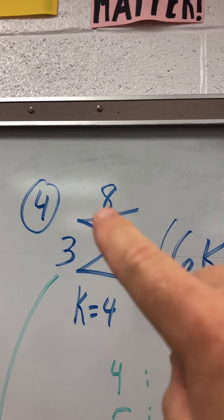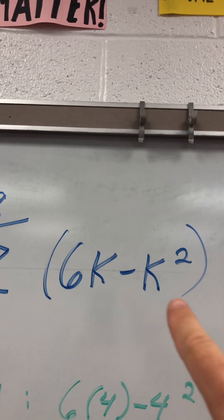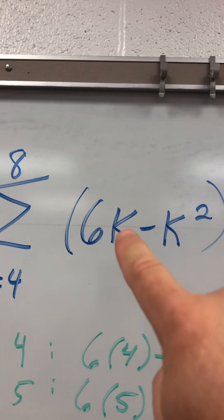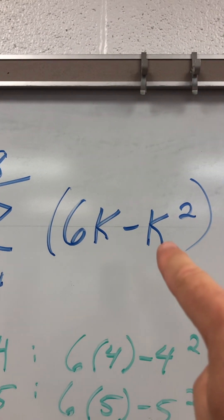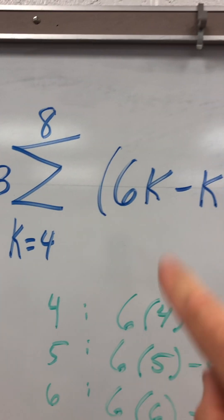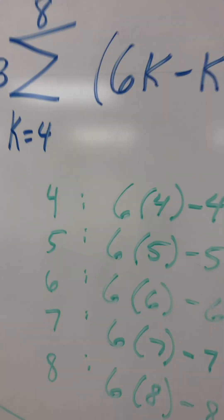We're going from 4 to 8. Which means in both k's we're putting in 4. I'm going to substitute 4 for k here and 4 for k here. And then I'm going to use 5 and then 6. And 7 and 8.